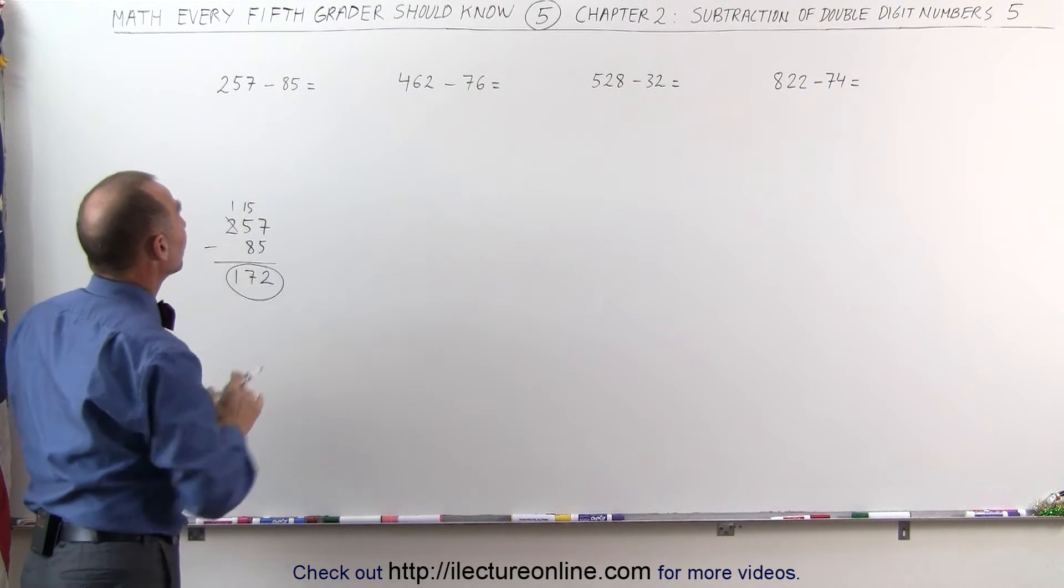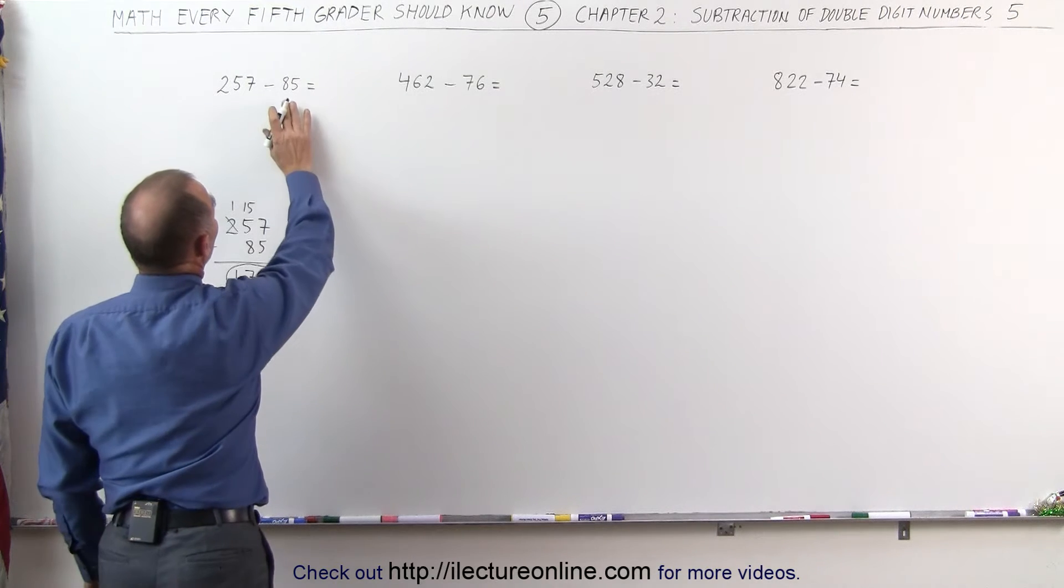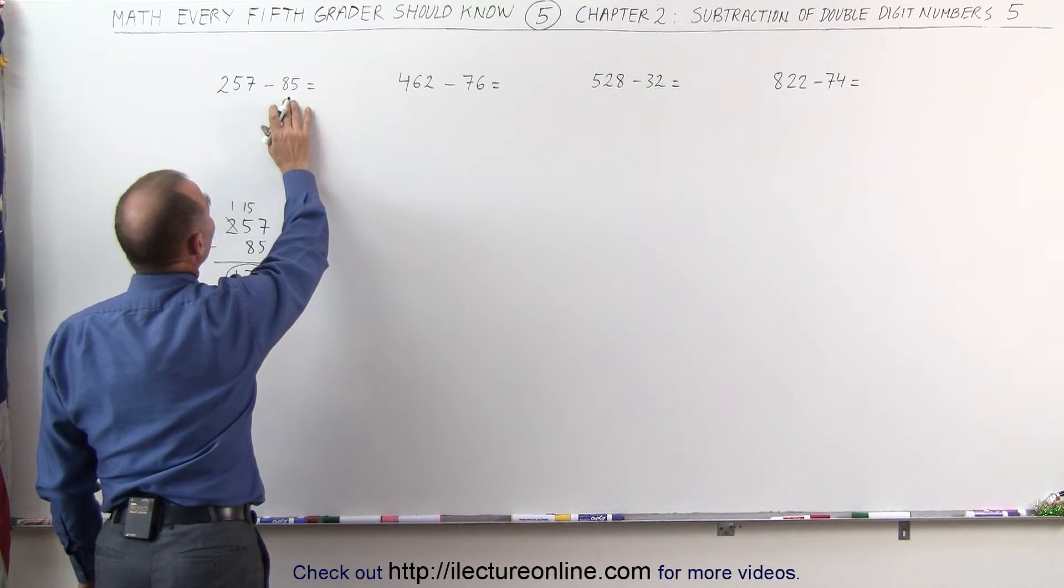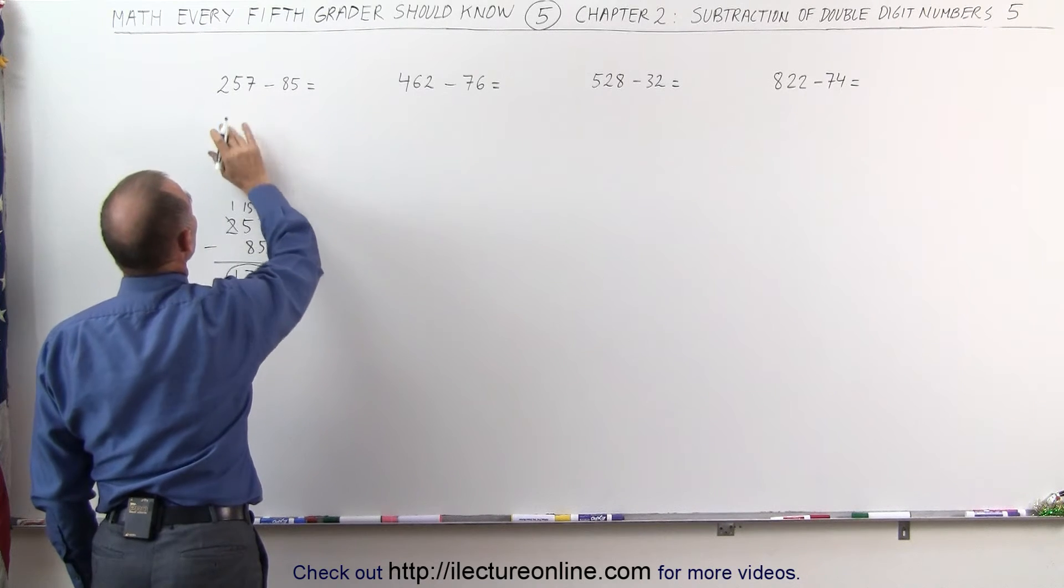But can we do this without having to do that? There is a way and the way I would is the following. 85 is 15 less than 100, so what I'm going to do is I'm going to subtract 100 from 257.